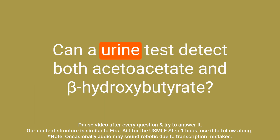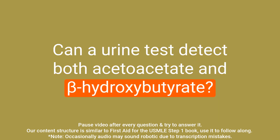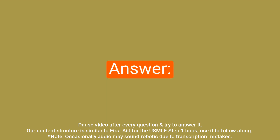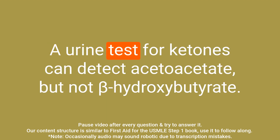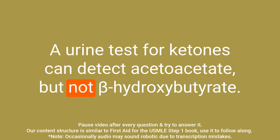Question: Can a urine test detect both acetoacetate and beta-hydroxybutyrate? Answer: A urine test for ketones can detect acetoacetate, but not beta-hydroxybutyrate.